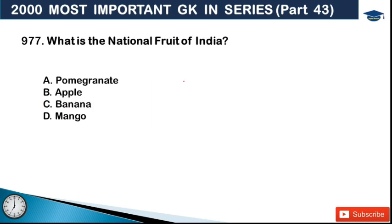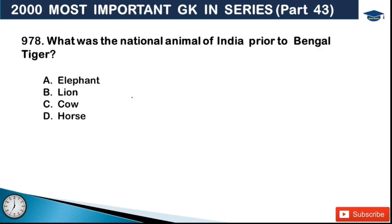Next: what is the national fruit of India? Our national fruit is mango (aam). Next: what was the national animal of India prior to the Bengal tiger? Options: elephant, lion, cow, and horse. The answer is B - lion. Before the tiger, our national animal was the lion.